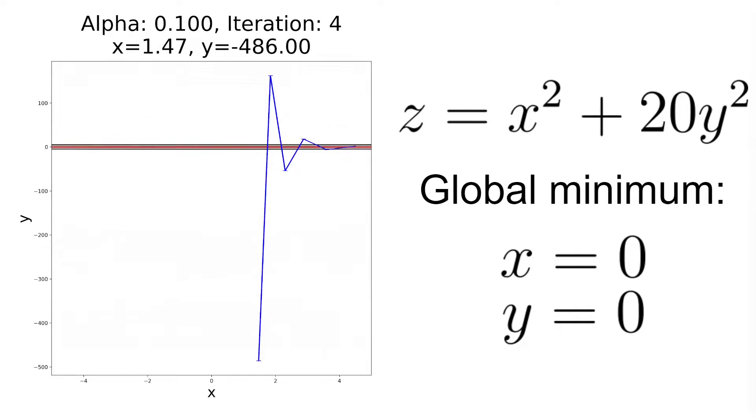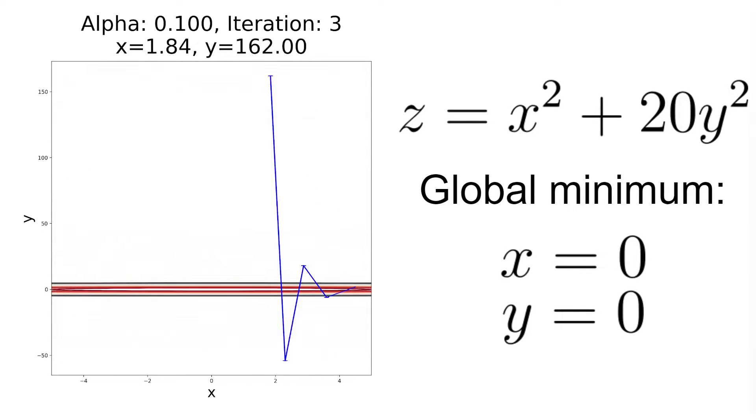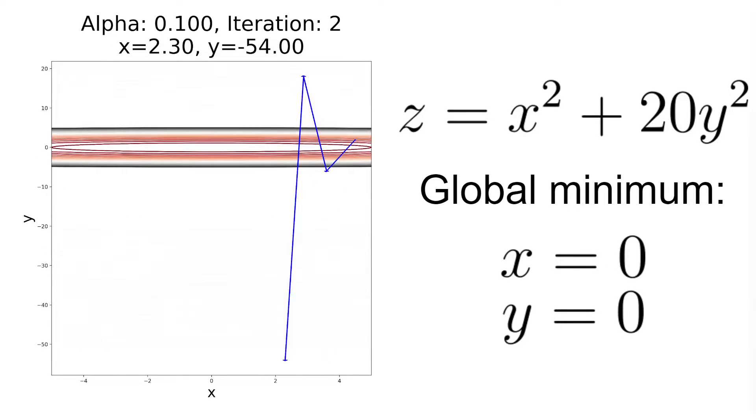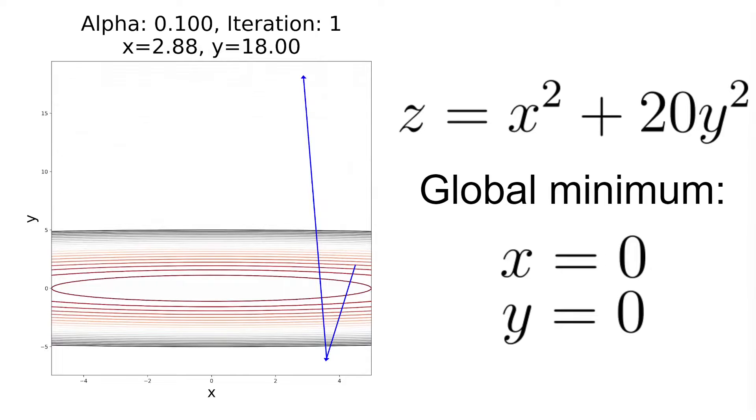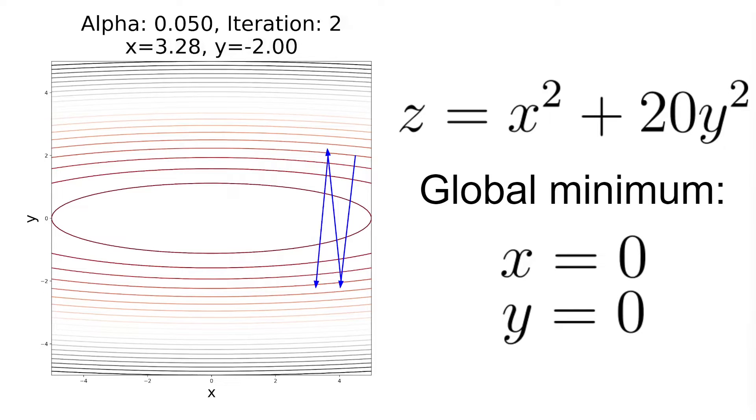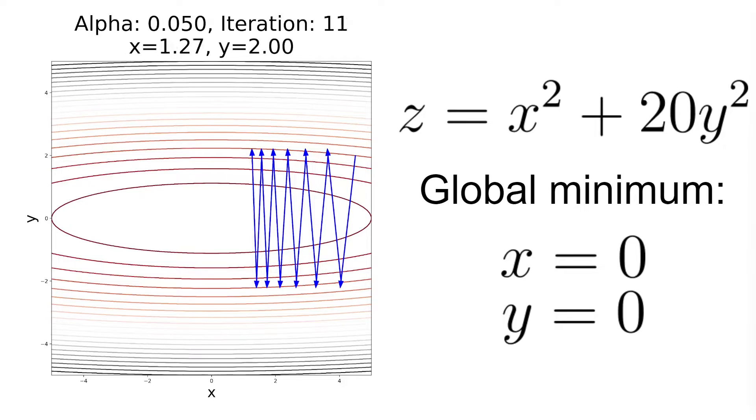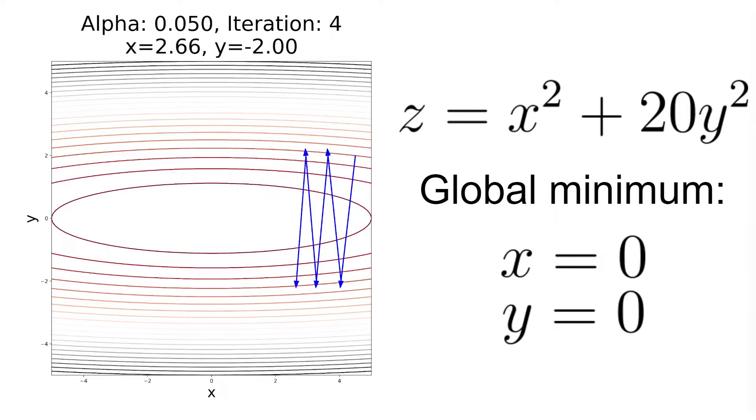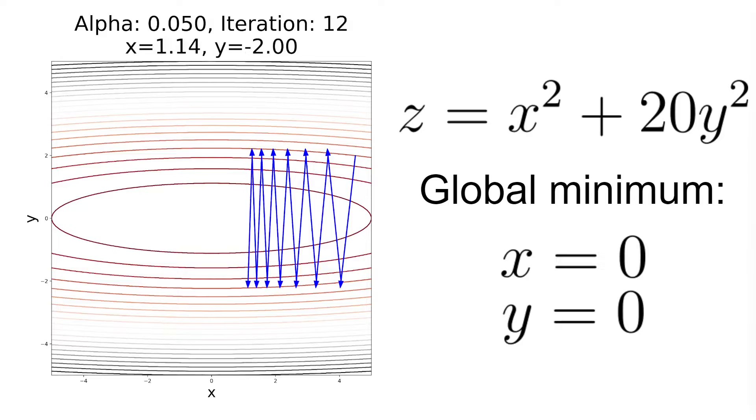So why is that? Well, the answer is simple. The learning rate alpha is tuned for the scale of the x-axis but not for the scale of the y-axis. And if we start to decrease the learning rate alpha, let's say from 0.1 to 0.05, then the gradient descent algorithm starts not to diverge on the y-axis but to oscillate between minus 2 and 2, which indeed is an improvement for our algorithm. However, this also affects the convergence rate on the x-axis making it slower as you might already have noticed.